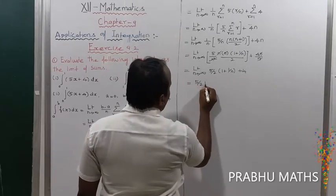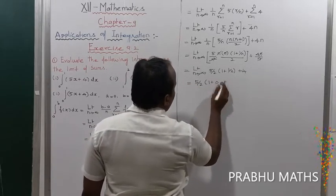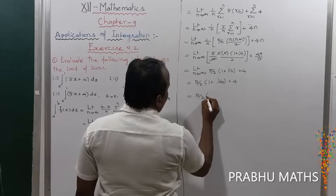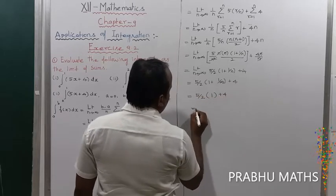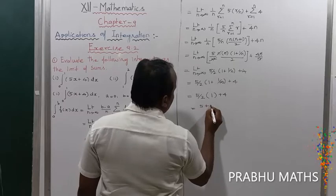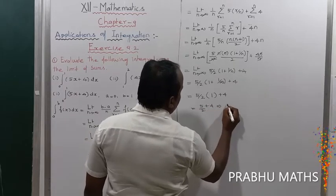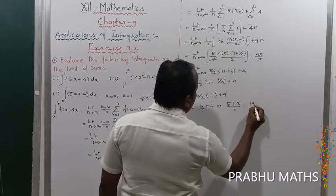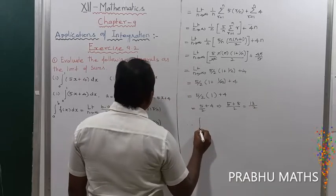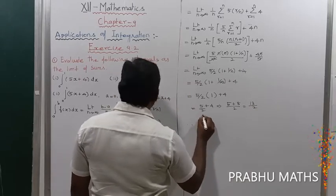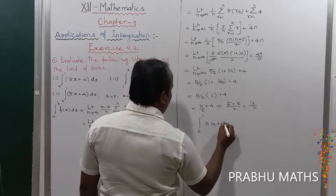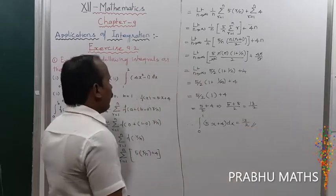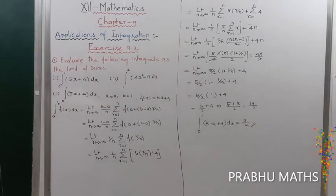As n tends to infinity, 1/n tends to 0. So this equals 5 by 2 times (1 + 0) plus 4, which equals 5 by 2 plus 4, which equals (5 + 8) by 2, equal to 13 by 2. Therefore, the integral from 0 to 1 of (5x + 4) dx equals 13 divided by 2. We get the result of the first subdivision.